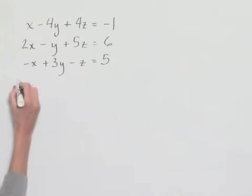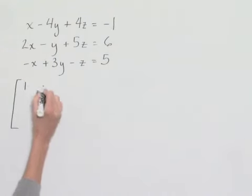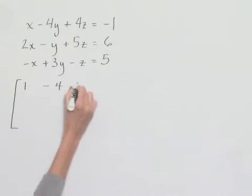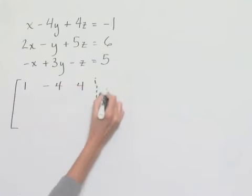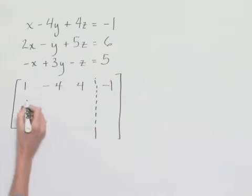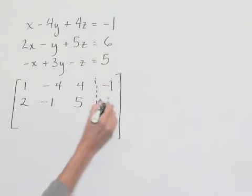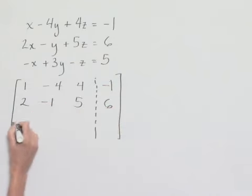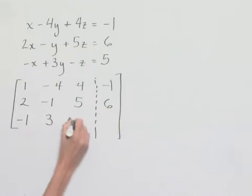We're going to set up the augmented matrix with our coefficients. The first row will be 1, negative 4, 4, separated from the result of negative 1. Our second row will be 2, negative 1, 5, and 6. Our third row will be negative 1, 3, negative 1, and 5.